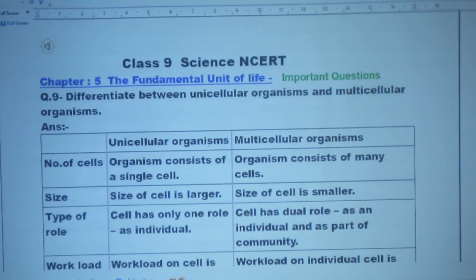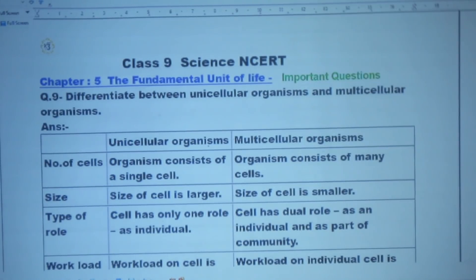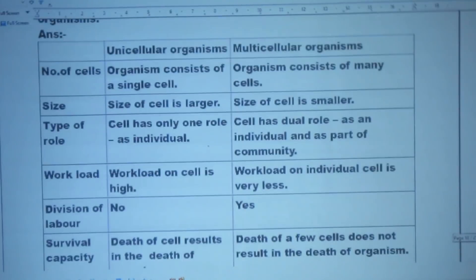Type of role: in a unicellular organism the cell has only one role as an individual, but in a multicellular organism the cell has a dual role — as an individual and as part of a community. Workload: workload on the cell is high in unicellular organisms, but in multicellular organisms the workload on an individual cell is very less.